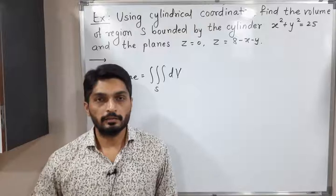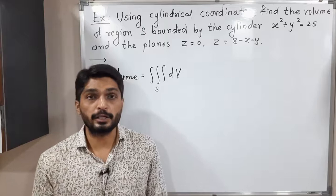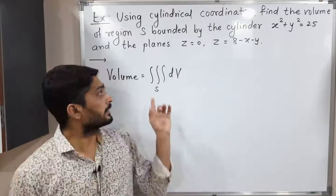Hi everyone, let us discuss this example. We have to find the volume of some solid region in R3. We have a very simple formula to calculate volume: triple integration dV, where dV means dx dy dz. The important part is defining the region S.